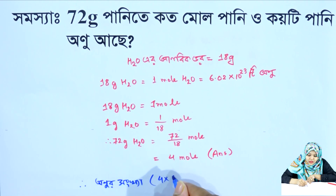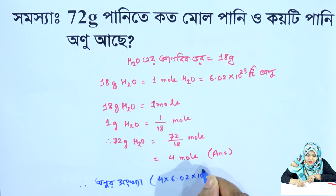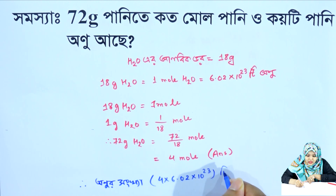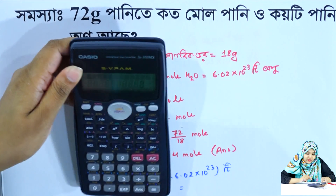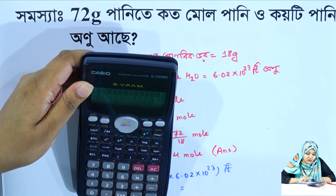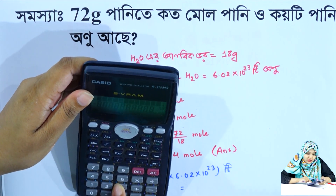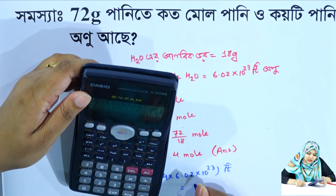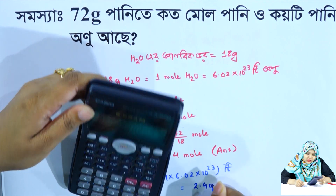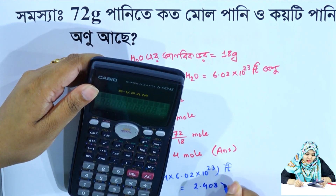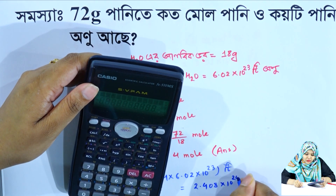4 into 6.02 into 10 power 23, which equals 2.408 into 10 power 24 molecules.